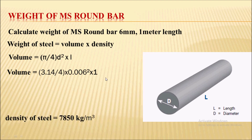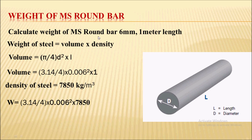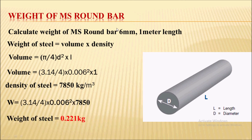The density of steel is 7850 kg per meter cube. Substituting this into the weight formula — volume into density — we get the result: the weight of steel for this round bar is 0.221 kg.